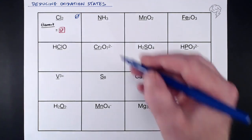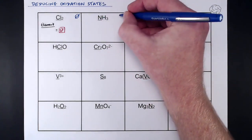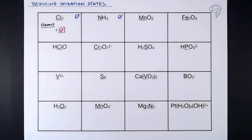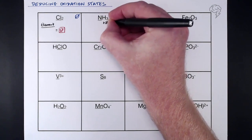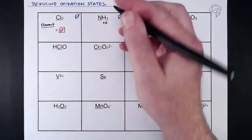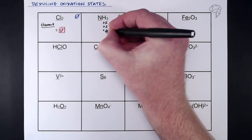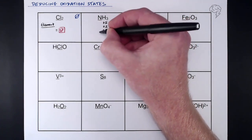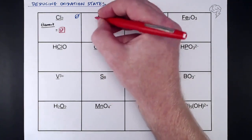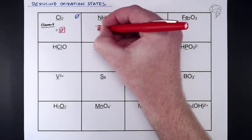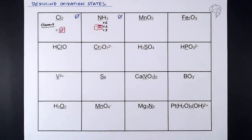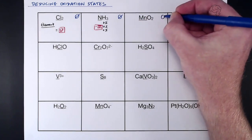Next is ammonia, NH₃. Again, the overall oxidation state is zero because there's no charge. We need to find the oxidation state of nitrogen. Hydrogen in any compound has a +1 oxidation state — it's not with a metal, it's with nitrogen — so we've got three lots of +1. Nitrogen must counteract those three to bring the overall back to zero, so nitrogen must be -3, because -3 cancels out the three +1s.